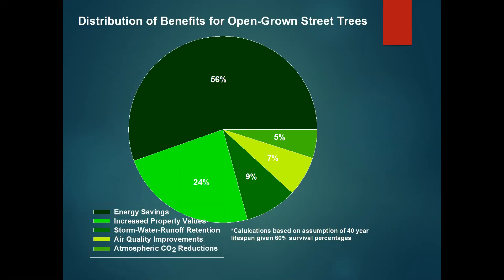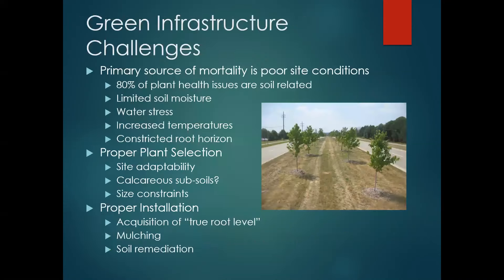Looking at the distribution of benefits of open-grown street trees — calculated based on a 40-year lifespan and 60% survival percentages — the benefits of street trees show that energy savings is probably the highest, followed by property values, stormwater runoff, air quality, and atmospheric CO2 reduction. We wanted communities to be more aware of these benefits, which could be used to help justify what they're doing in terms of planting or replanting programs.